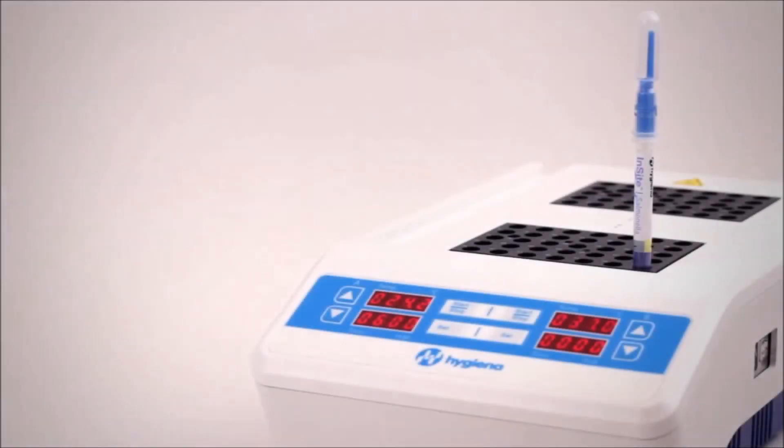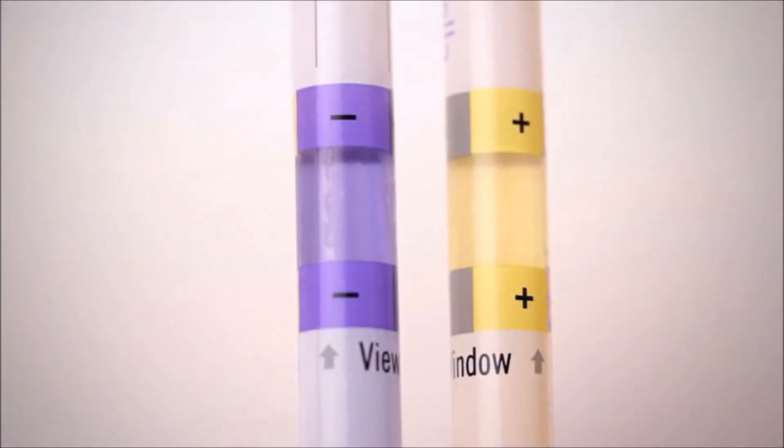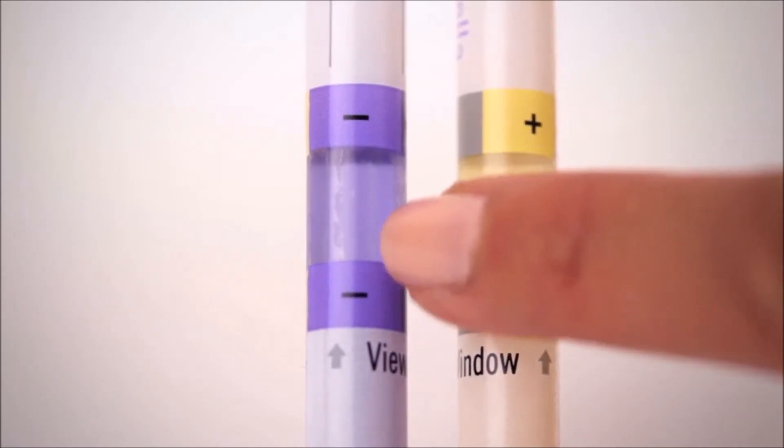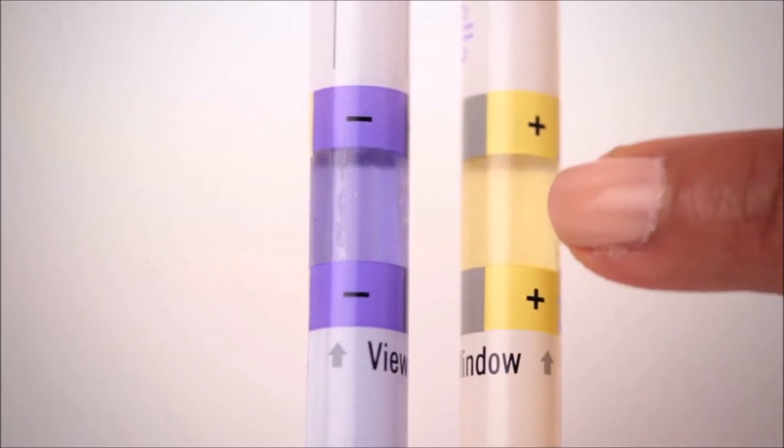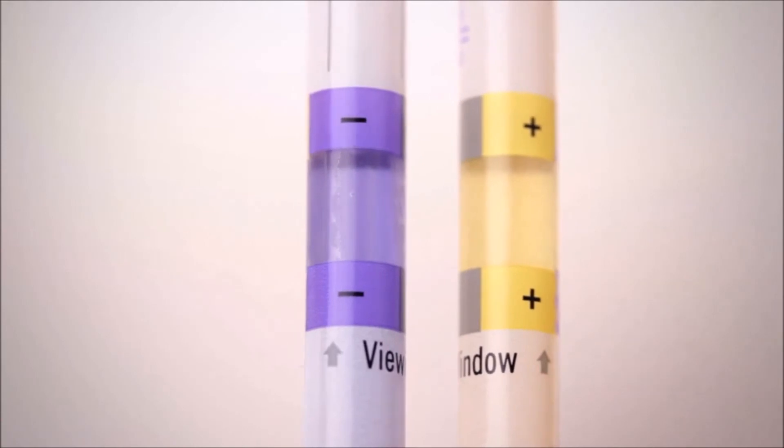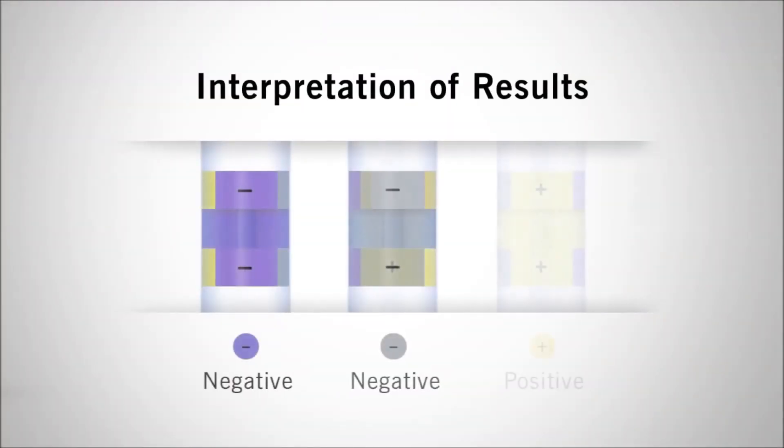To view results, hold the device upright and compare the color of the medium in the viewing window to the color chart on the tube label. If the color of the media changes from purple to bright yellow within 24 to 48 hours, the sample is considered presumptive positive for Salmonella.